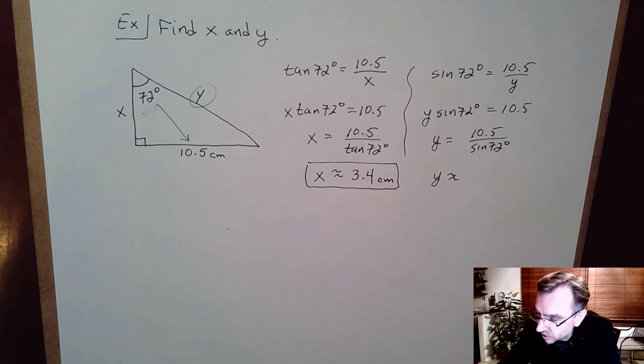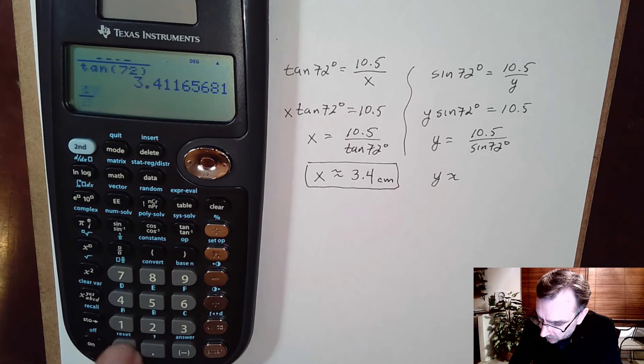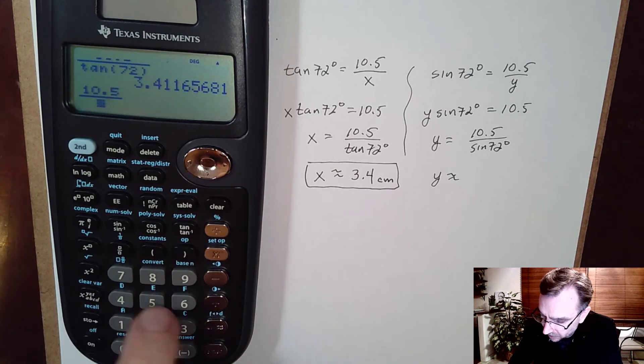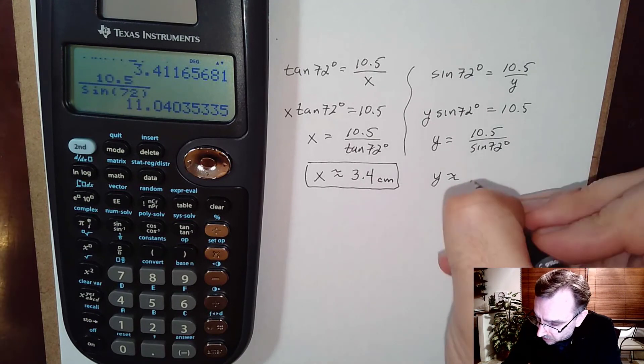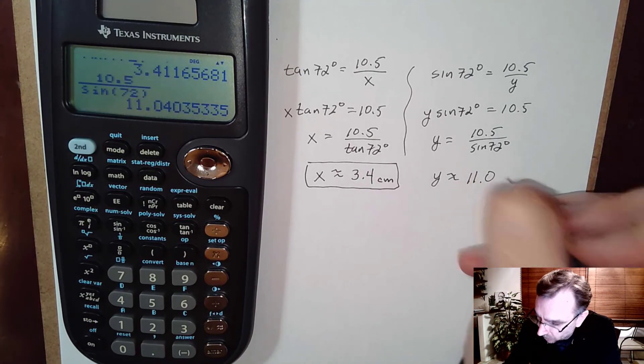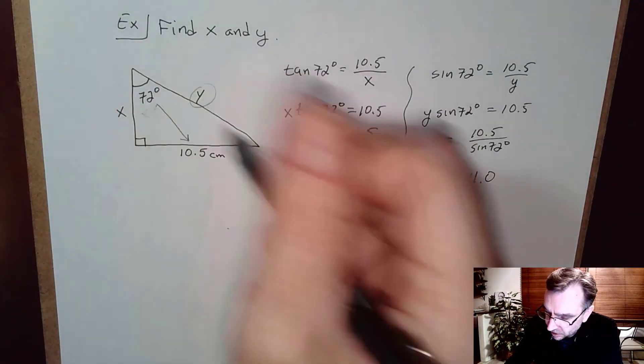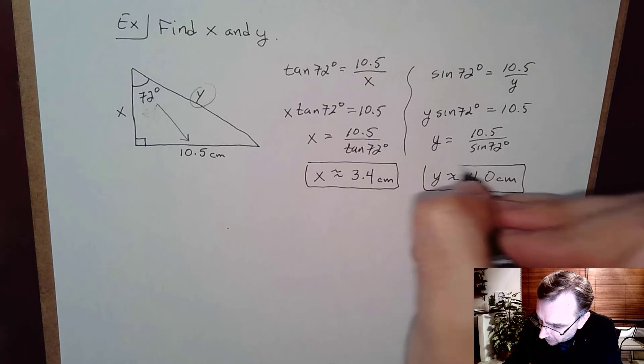And so y is approximately equal to, on a calculator, 10.5 divided by sine of 72, yeah. And that comes out to approximately 11.0. And again, that was a length, right, of the hypotenuse measured in centimeters in this particular example.